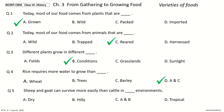And the answer is A and B. So in this video we saw the section Varieties of Food. In the next video we will see the next section of Chapter 3: The Beginnings of Farming and Herding. I will see you there.